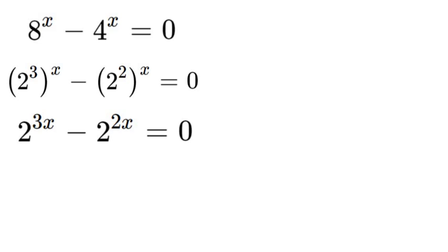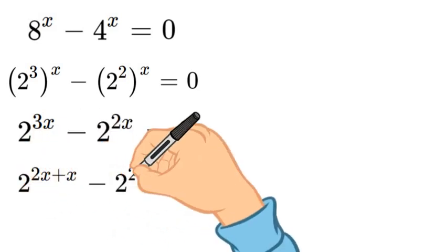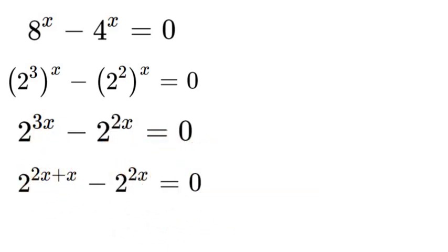Now you're going to see in a minute why we're going to do that, but let's go ahead and do that. So 2 to the power of 2x plus x minus 2 to the power of 2x equals 0.